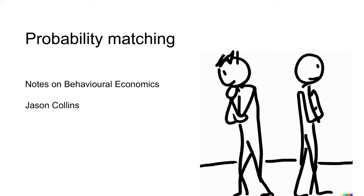Hi, I'm Jason. This video is on probability matching. Probability matching is the tendency of people to mirror the probability distributions they observe in their predictions of events.